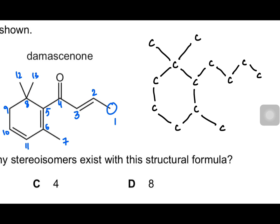There's a double bond between carbon two and three. Numbering through: one, two, three, four, five, six, seven, eight, nine, ten, eleven, twelve, thirteen. There's a double bond here between two and three, so I've marked a double bond. You can see on carbon number four there's a double bonded oxygen. You can also see there's a double bond between carbon five and six, and between carbon ten and eleven.